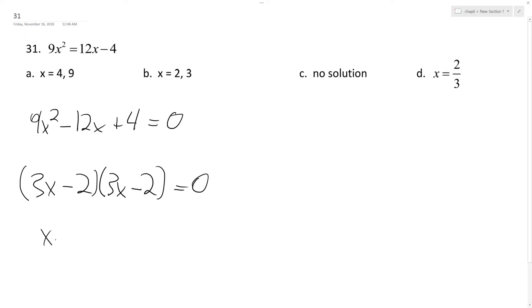That means x is going to be equal to 2/3. When I multiply by 2/3 for either one of these, I'm going to get 0 out. So d is my solution.